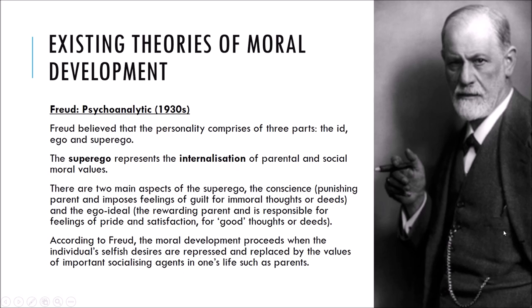Before Kohlberg did his research, there were some existing theories of moral development. Freud is somebody we are quite familiar with. Freud suggested that your personality is made up of three parts: id, ego, and superego. Freud suggested that when your superego develops, it is due to the internalisation of your parents' social and moral values. In the Oedipus and Electra Complex, when you identify with the same-sex parent, you internalise those characteristics, including their system of morals. That's the development of your superego.